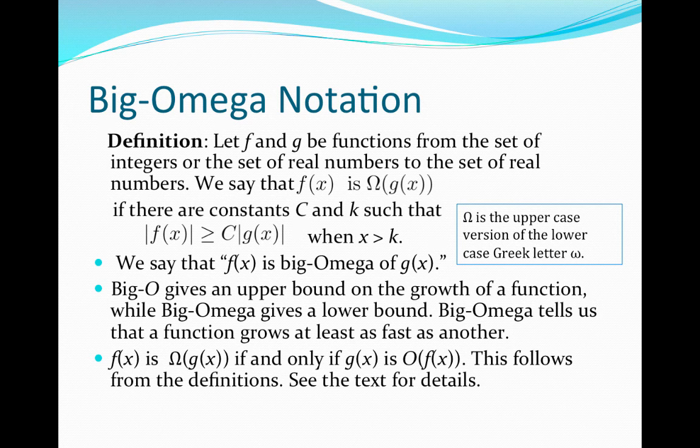Now that we have covered Big O notation, we're ready to look at Big Omega notation. As this is also a property of functions, which is quite similar to Big O notation, the definition begins by letting f and g be functions from the set of integers or the set of real numbers to the set of real numbers. Then we say that f(x) is Big Omega of g(x) if there are constants c and k such that |f(x)| ≥ c·|g(x)| when x > k.